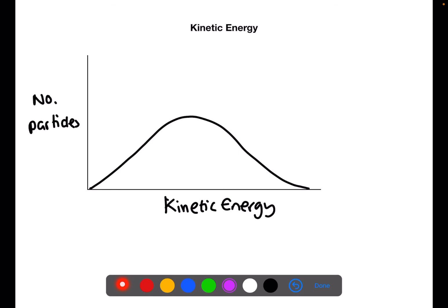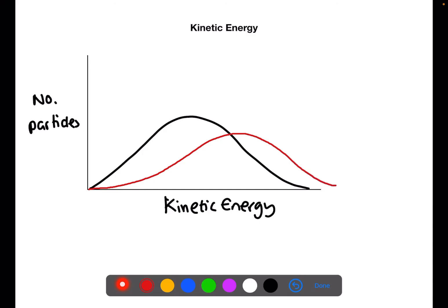Related to reaction profiles is the kinetic energy diagram. Here we can see a basic kinetic energy diagram where the kinetic energy increases across the x-axis and the number of particles is on the y-axis. You get a curve where a very small number of particles have a low kinetic energy, a small number have a large kinetic energy, and the majority are in the middle. Temperature is a measure of the average kinetic energy of all particles. If we increase the temperature, the average kinetic energy increases, so the peak of the curve moves to the right and lower down.